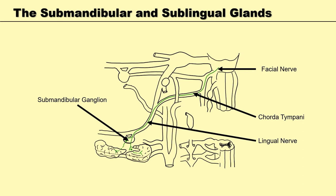Both the submandibular and sublingual glands receive their secretomotor supply from the facial nerve, cranial nerve 7. The branches of cranial nerve 7 providing this function are completely different from those involved in the muscles of facial expression. This slide shows a simplified version of the pathway, which also shows sensory fibres travelling to the anterior two-thirds of the tongue, carrying taste sensations — but today we are focusing on just the secretomotor fibres.